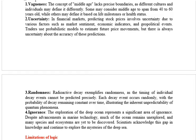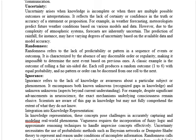Next is randomness. Randomness refers to the lack of predictability or patterns in a sequence of events or outcomes. It is characterized by the absence of any order or regularity, making it impossible to determine the next event based on the previous ones. Based on the previous event's result, we cannot predict what will happen next.